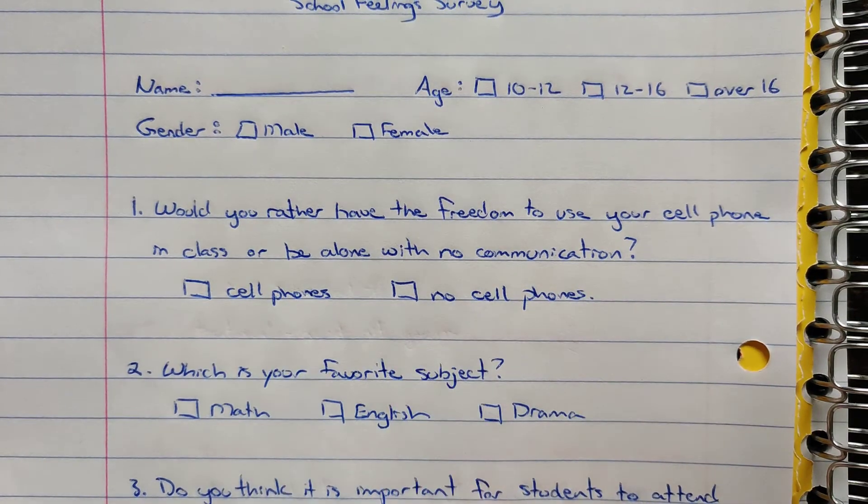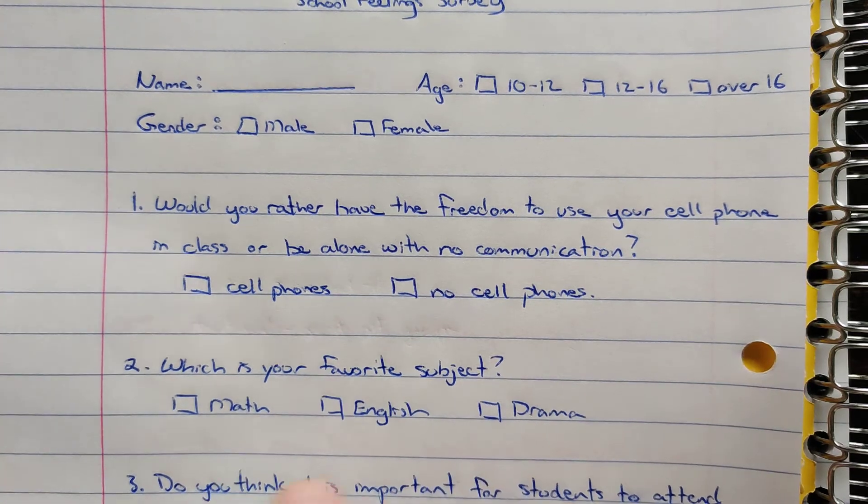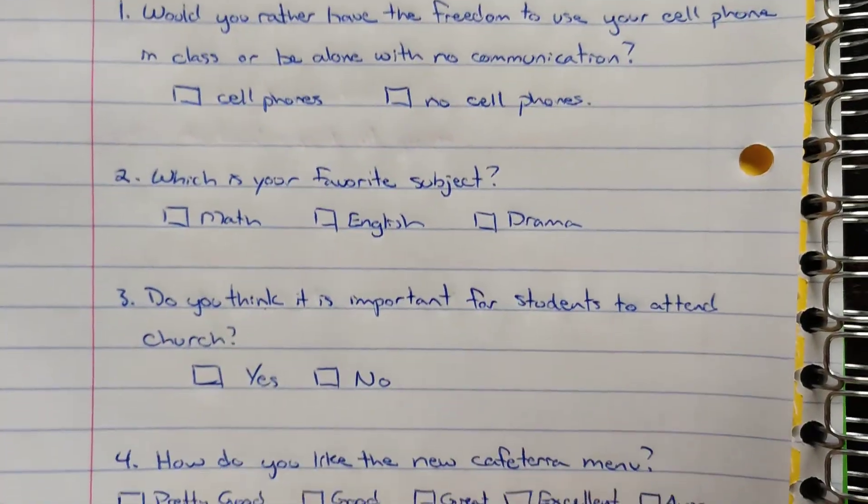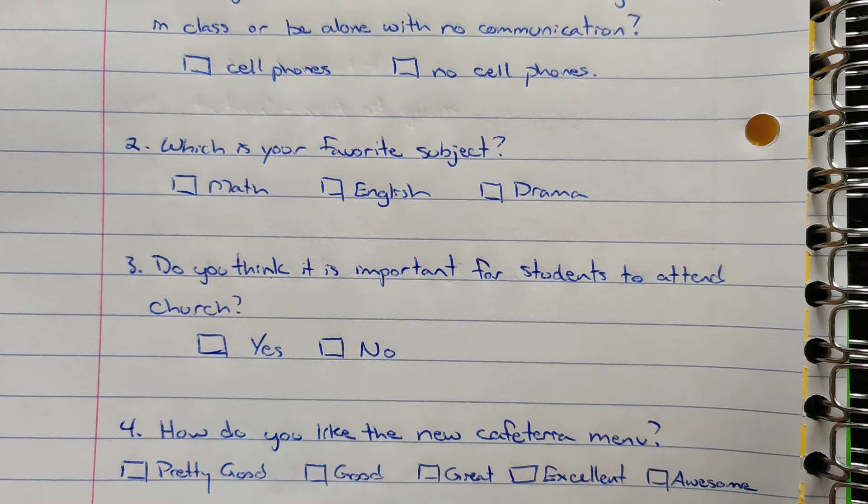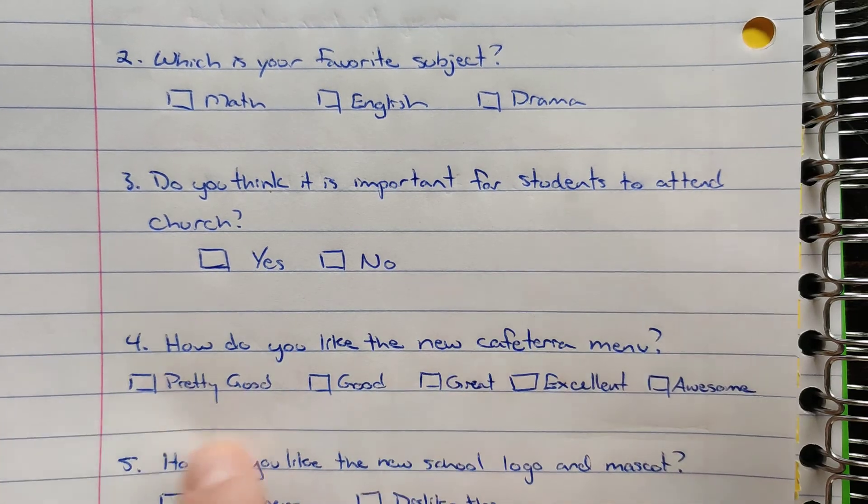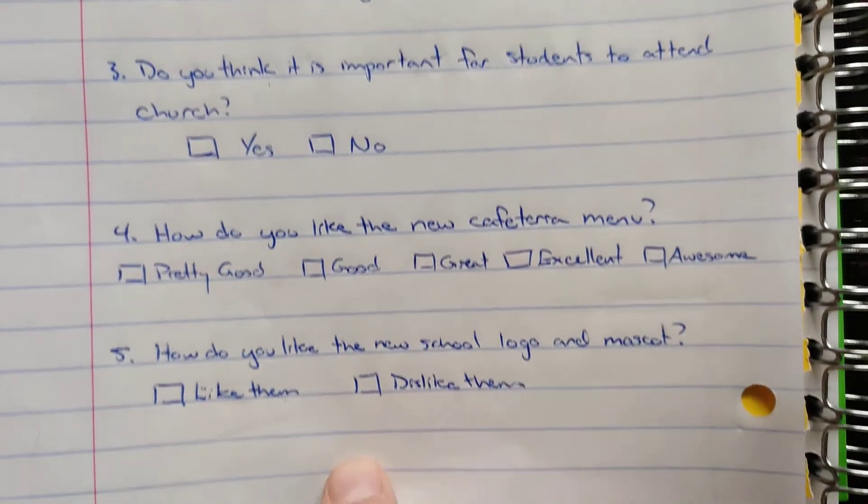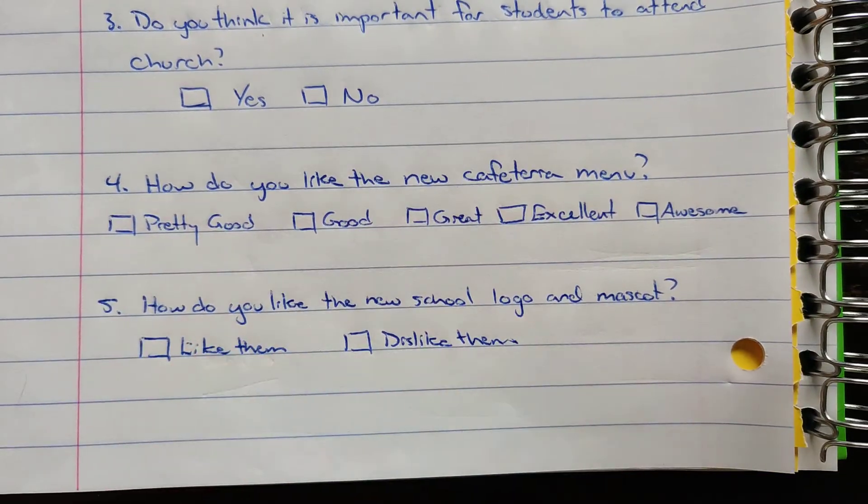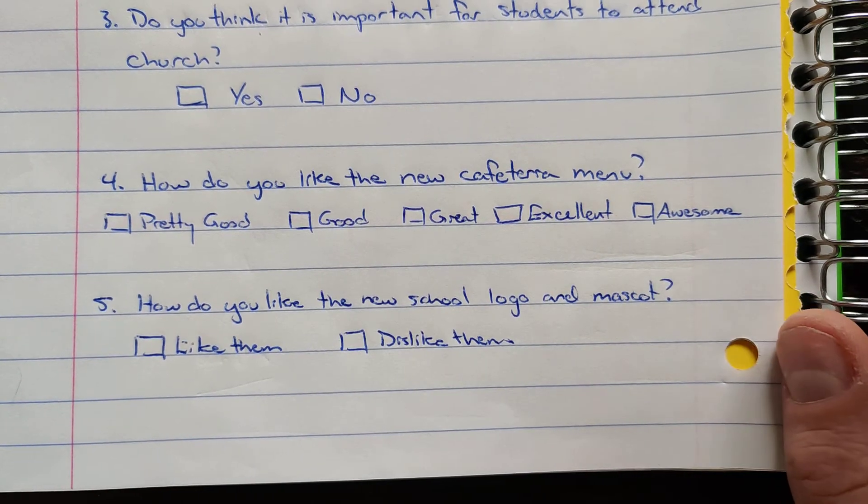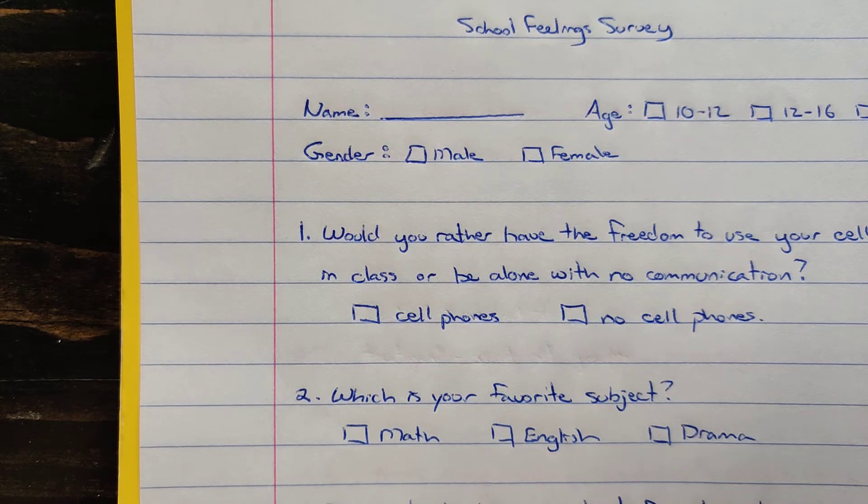The options are having a cell phone or no cell phone. What's your favorite subject? Math, English or drama? Do you think it's important for students to attend church? Yes or no? How do you like the new cafeteria menu? Is it pretty good, good, great, excellent or awesome? How do you like the new school logo and mascot? Do you like them or do you dislike them? So these are some possible questions someone might put in a survey about the school.